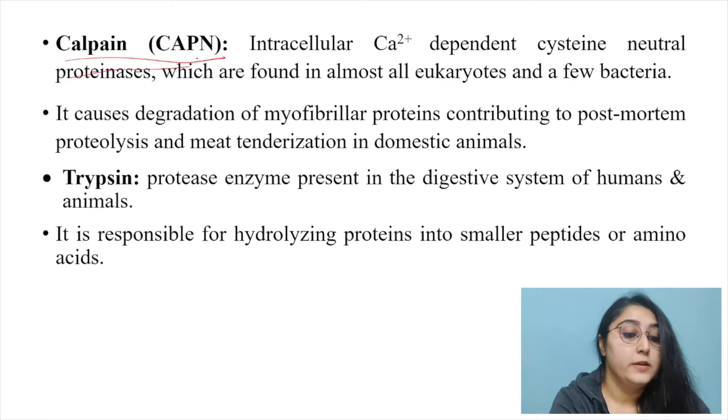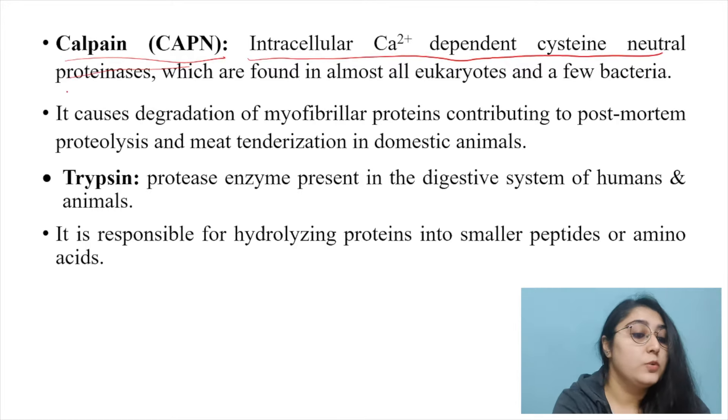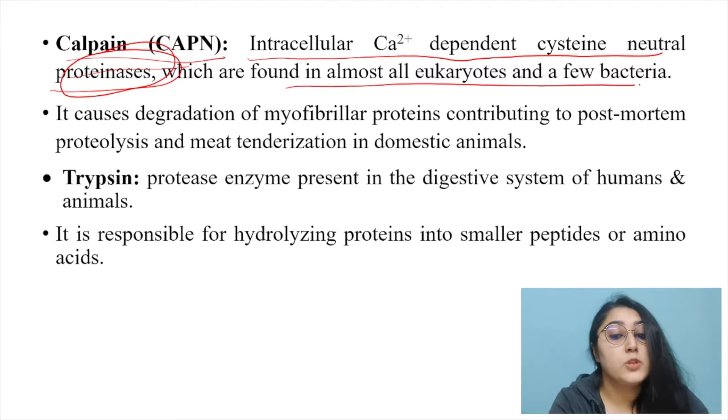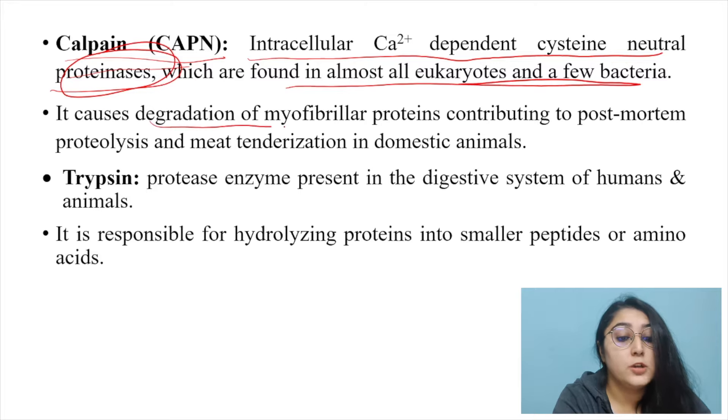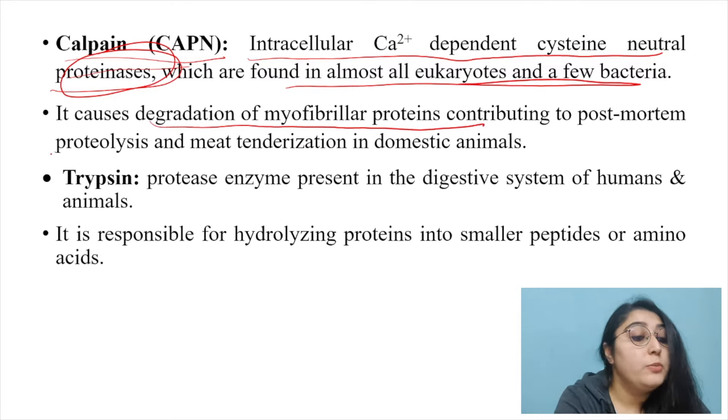This proteolytic activity helps deal with rigor mortis and the meat becomes somewhat tender. We need a proteolytic enzyme acting on muscle protein. Calpain is an intracellular calcium-dependent neutral proteinase found in almost all eukaryotes. It causes degradation of myofibrillar proteins, contributing to post-mortem proteolysis and meat tenderization — making it the correct answer.